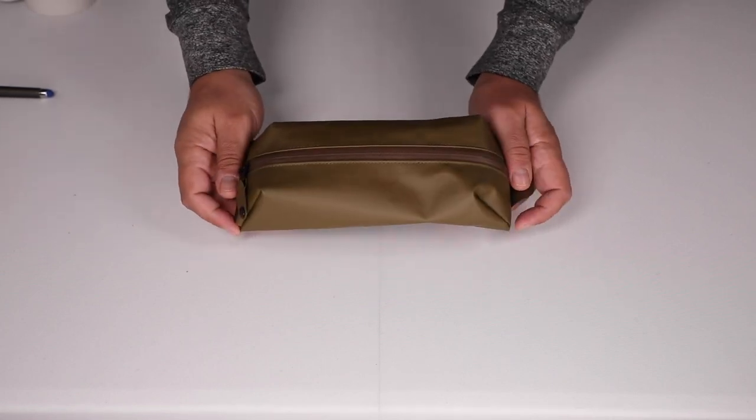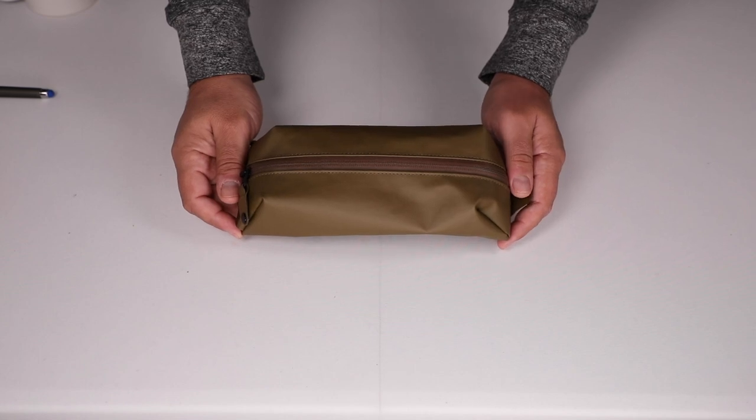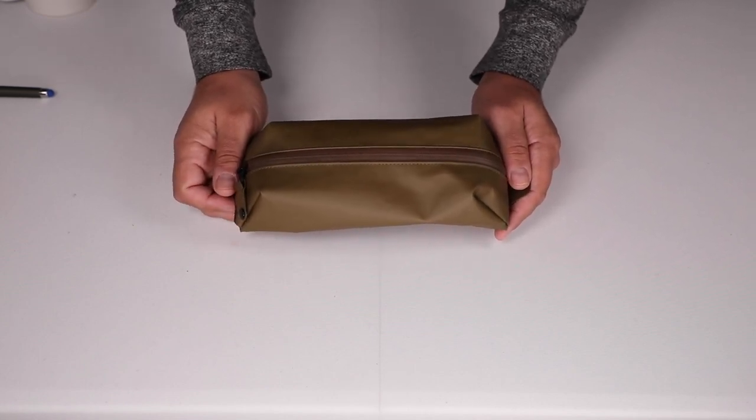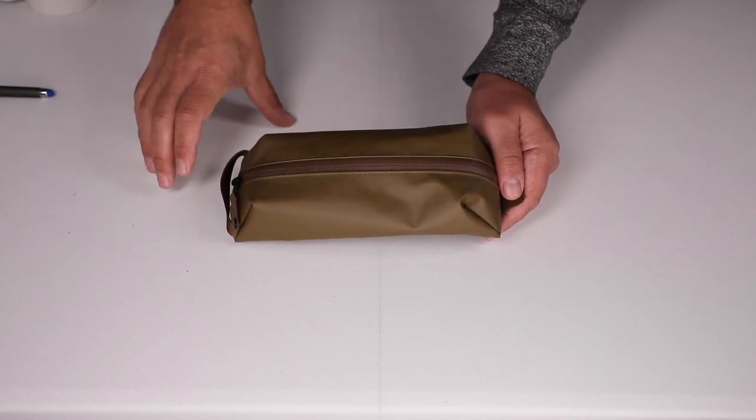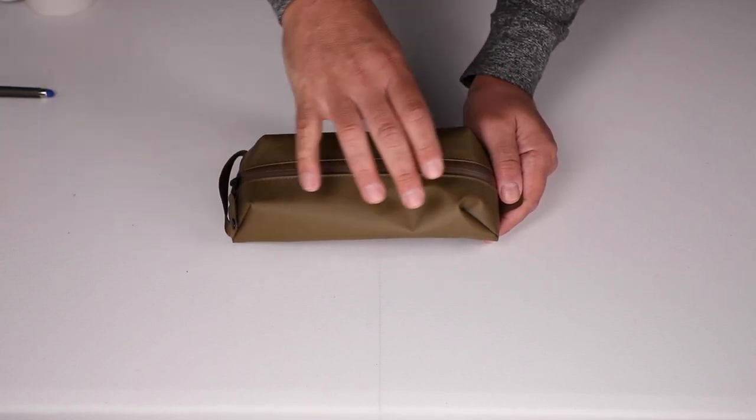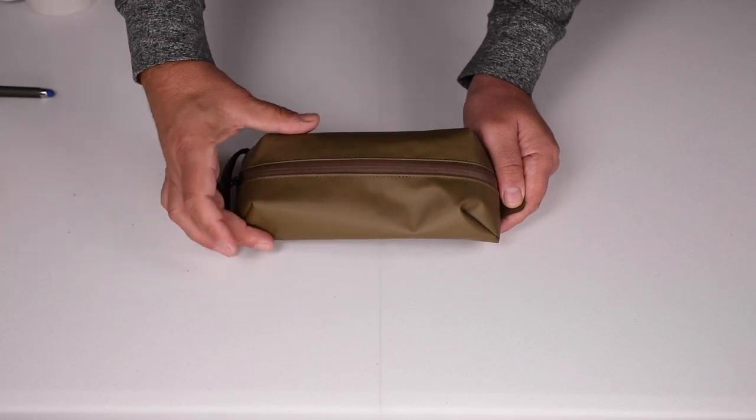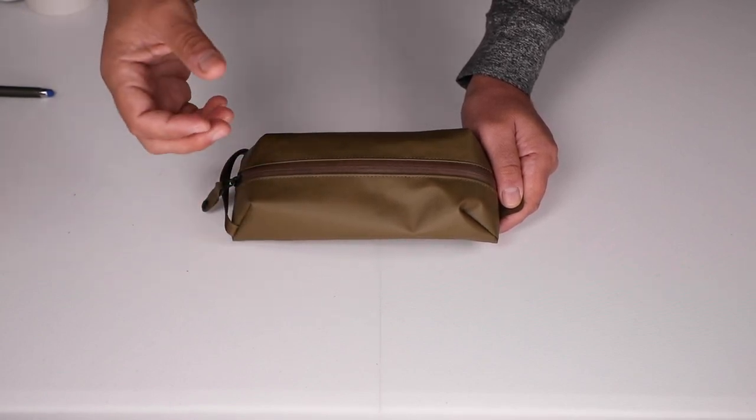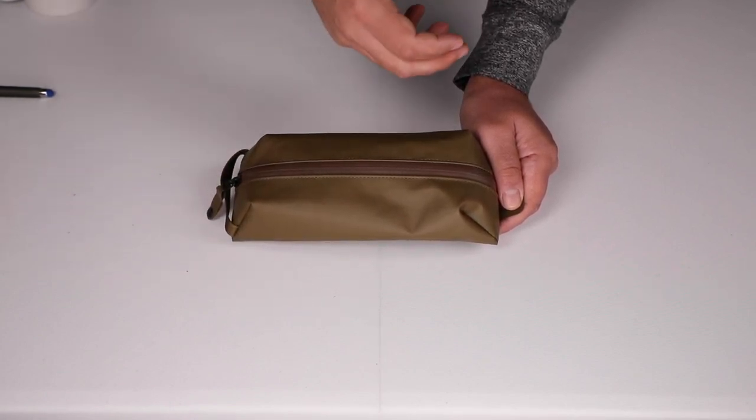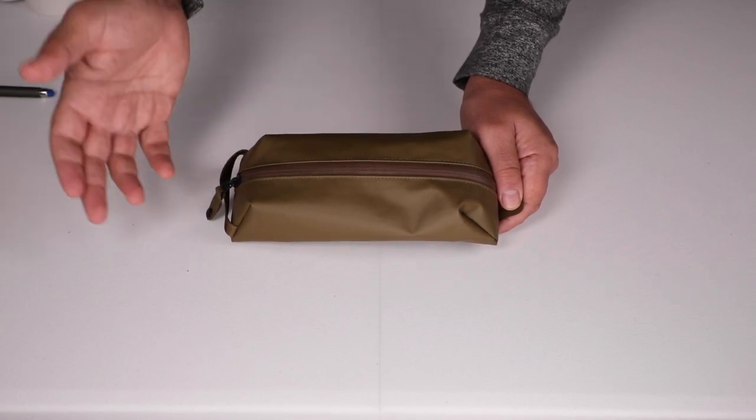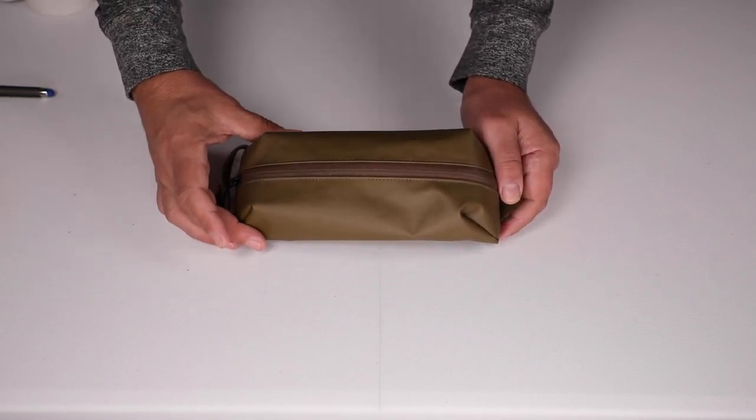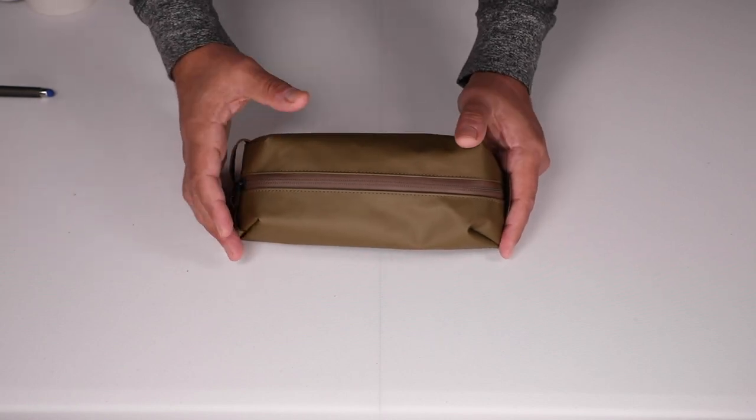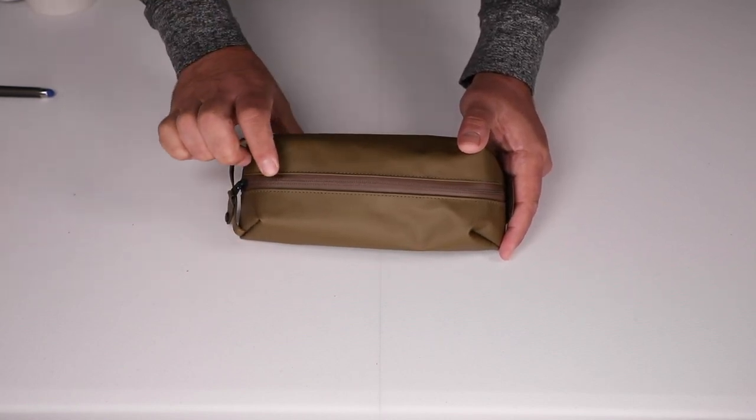The size, it does look a little small, but surprisingly it holds a ton. I can put in all my cleaning supplies for my camera gear. I can use it to go to work and put in all the supplies that I need, such as phone chargers, battery chargers, computer chargers, pens, pencils, things like that. It is 0.5 liters. It is nine inches long, four inches wide, and three inches deep.